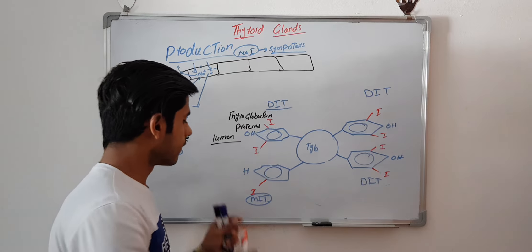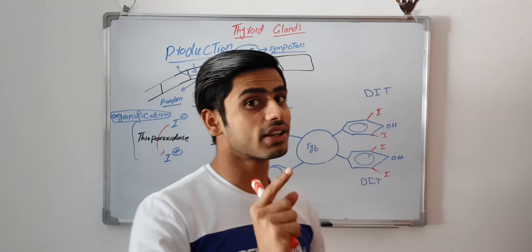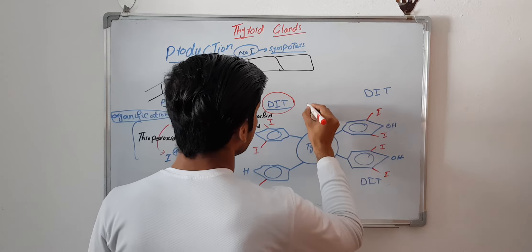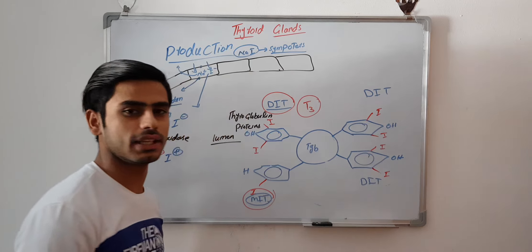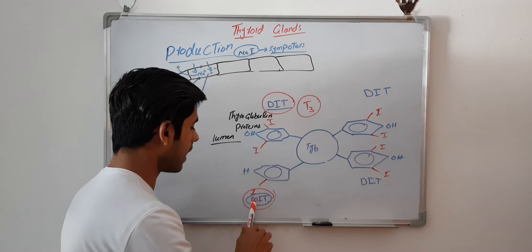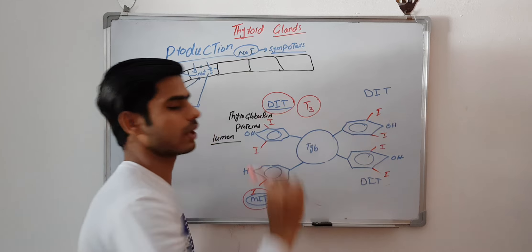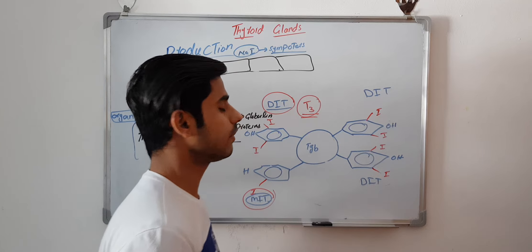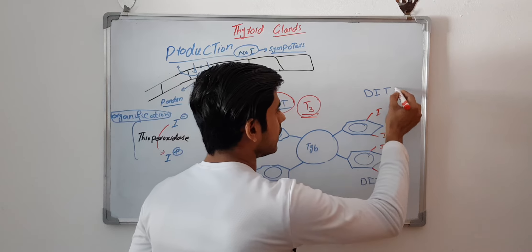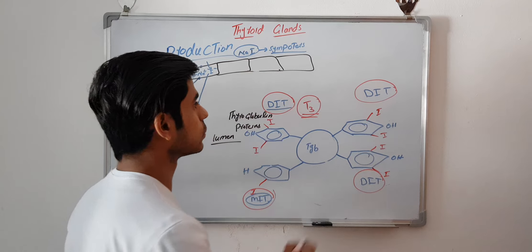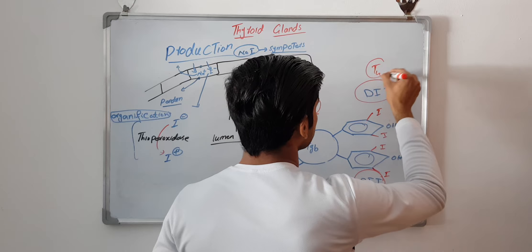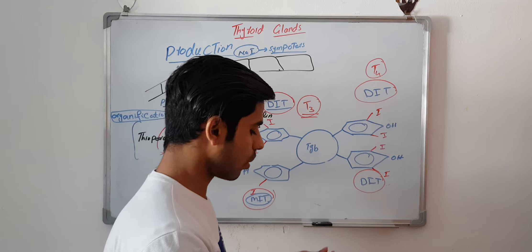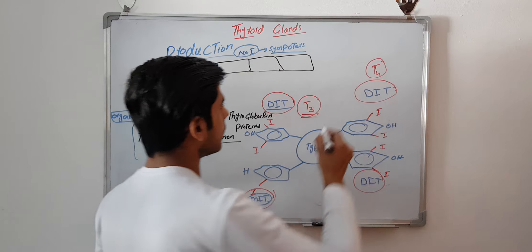When one monoiodotyrosine and one diiodotyrosine combine, they form triiodotyrosine — T3 hormone (1+2=3). When two diiodotyrosines combine (2+2=4), they form tetraiodotyrosine — T4 hormone. So T3 and T4 hormones have been produced.